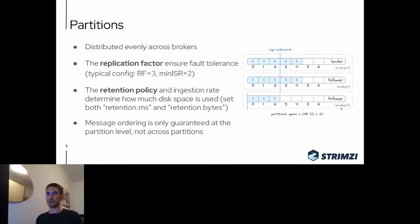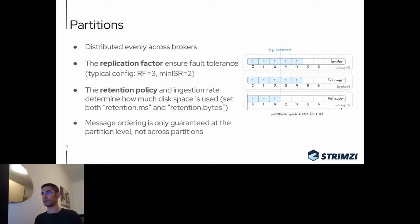One important property of a single partition is that it guarantees message ordering, but only at the partition level — not across partitions. If you increase the partition count, you break ordering. So if your use case absolutely requires ordered messages, use a single partition or reorder on the consumer side. Messages are also visible to consumers only up to the high-watermark, meaning they are considered committed and safely stored in the cluster.